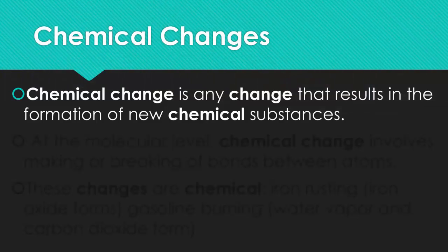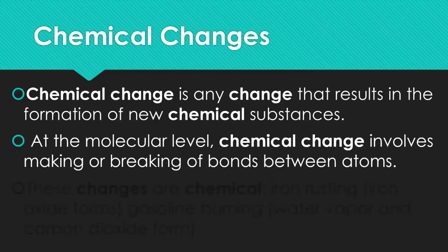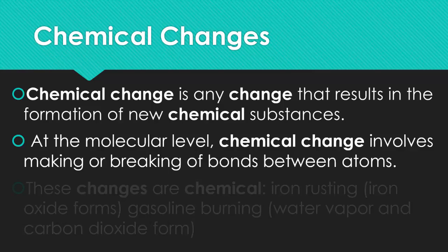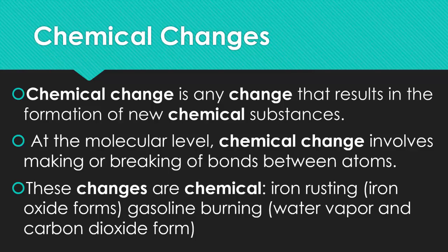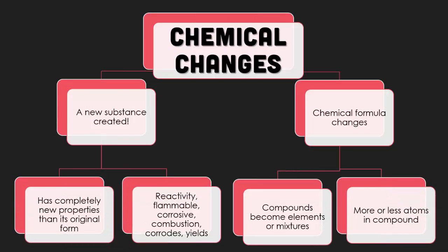A chemical change is any change that results in the formation of new chemical substances. At the molecular level, chemical changes involve making or breaking bonds between atoms. These chemical changes can be like iron rusting, gasoline burning, anything along those lines — you're changing the substance.